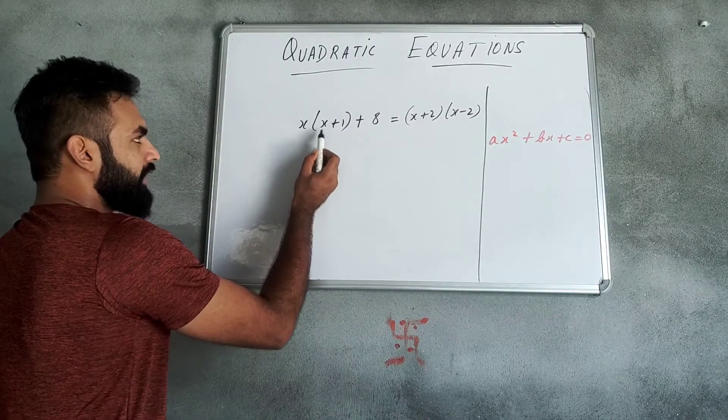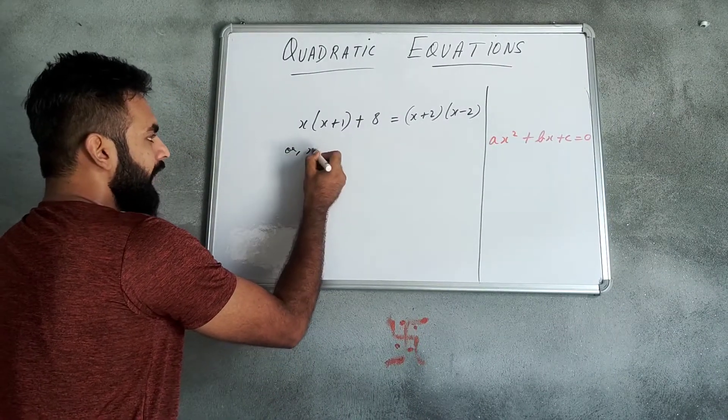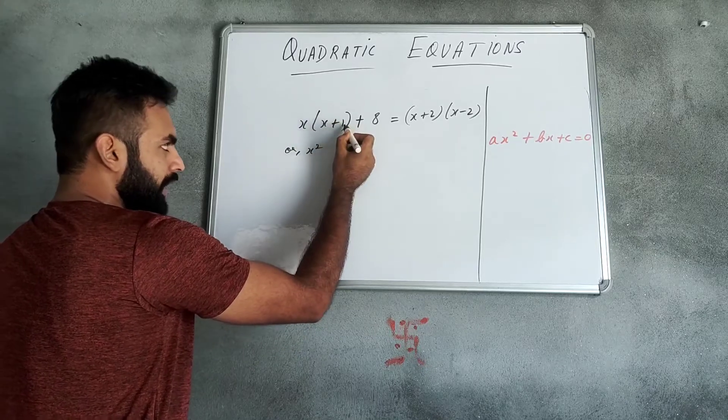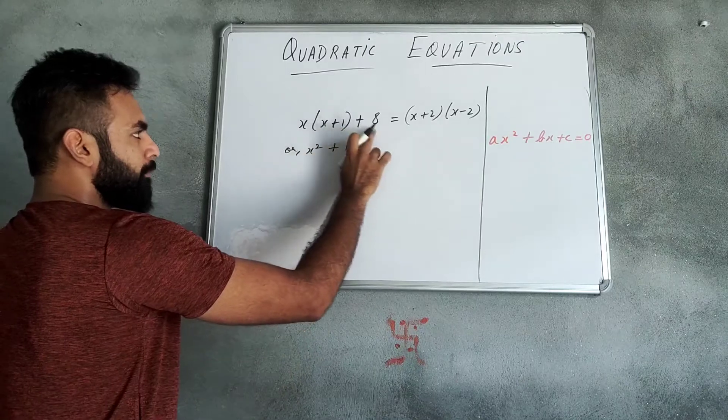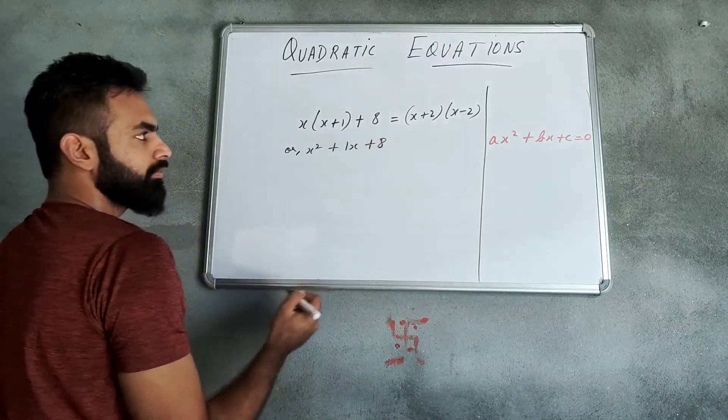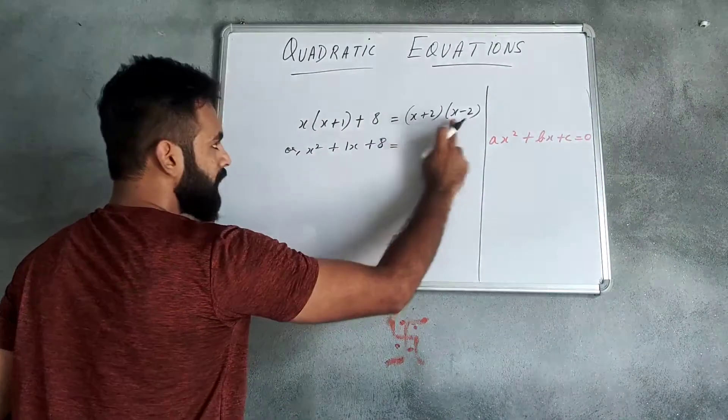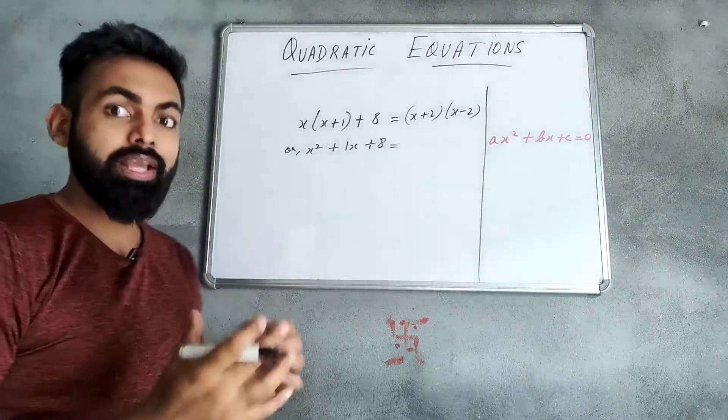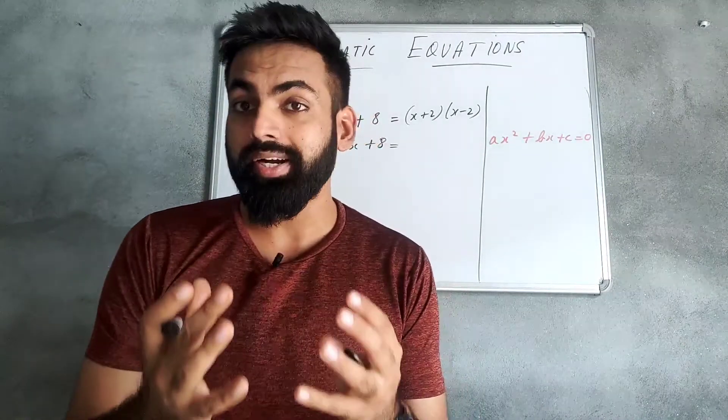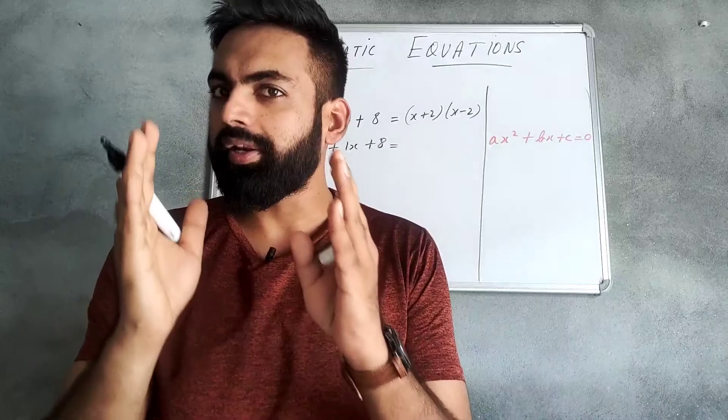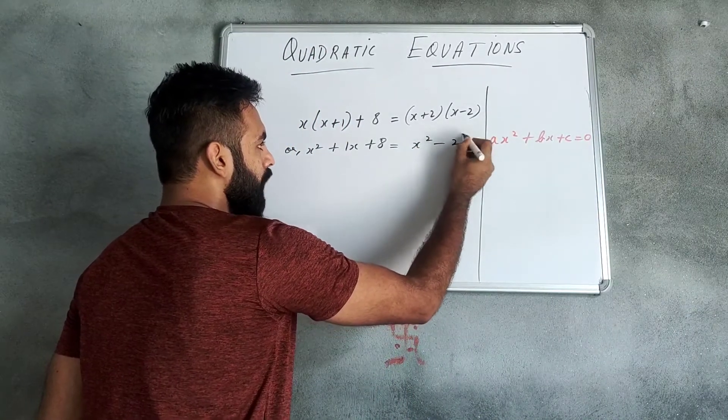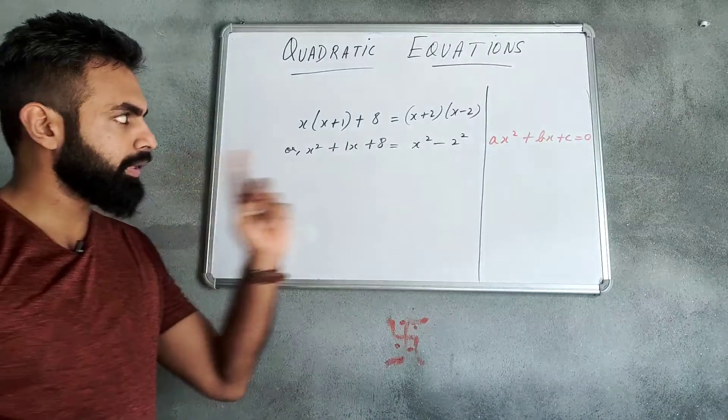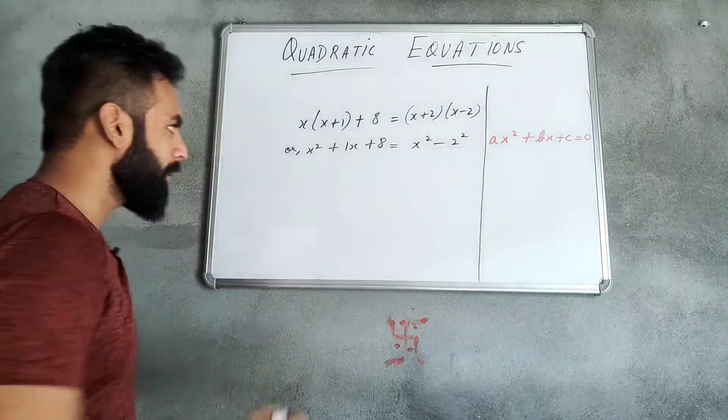On the left side, when I have x-square, then you have x-square. So I get 1x. Then plus 8, as it is, equals to - here, x plus 2 and x minus 2 multiply. So, (a+b) into (a-b) identity. And that is, a² - b². So I write here, x² - 2². a plus b into a minus b identity - I use this for multiplication.